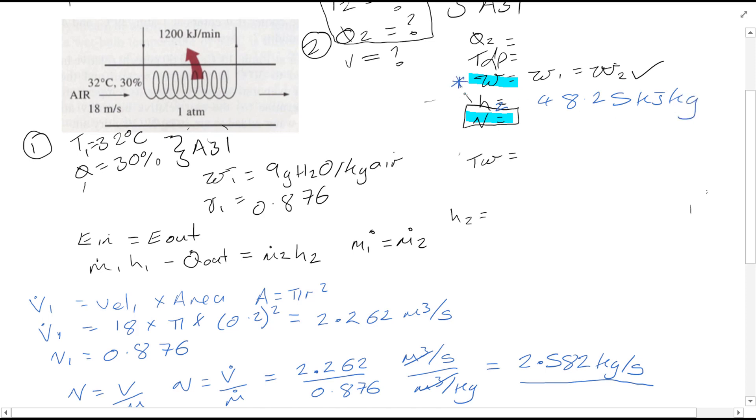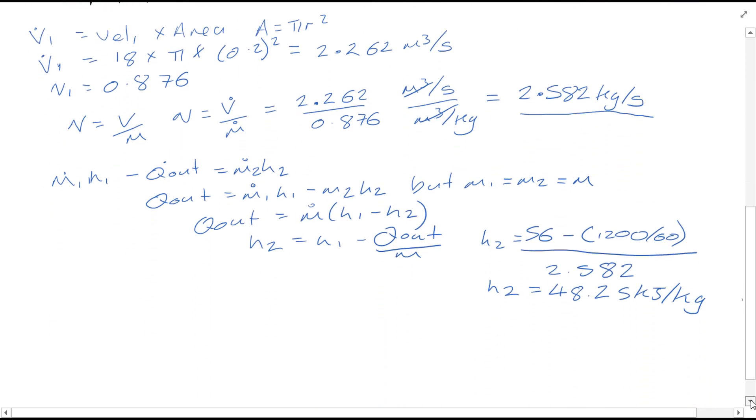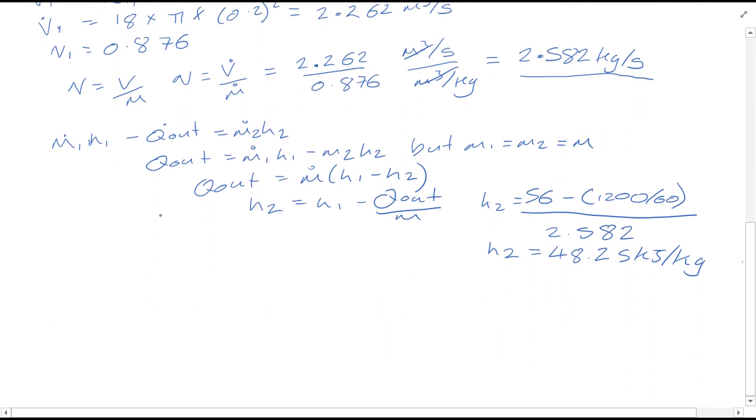We've now got our two values at point 2, so we can go back to using chart A31 from the thermodynamics property table booklet and find the values required, which is T2. You can easily find from the chart 25 degrees C and a relative humidity of 46%.